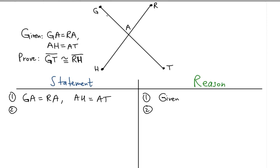Notice that we can add GA and AT to get the whole thing GT. So we can write GA plus AT is equal to GT, and RA plus AH is equal to RH. This is the segment addition postulate.